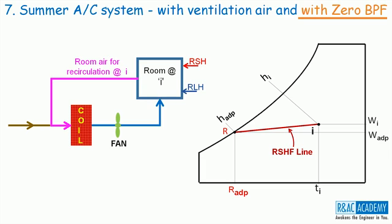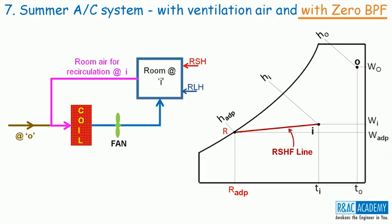In this case, we are supplying fresh ambient air for ventilation purposes. Let the state of the ambient air be at O and let us plot it on the psychrometric chart. Does this mean that there will not be any recirculation of room air in this case? The answer is no, excepting few cases like operation theatres, ICUs, etc. in hospital air conditioning applications and some special purpose requirements in industrial air conditioning. The remaining air conditioning systems will recirculate the room air along with the ventilation air.